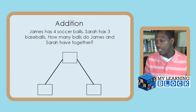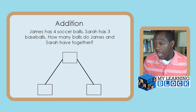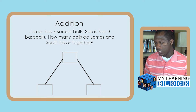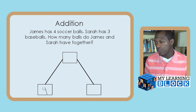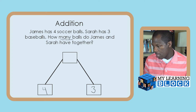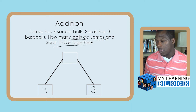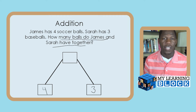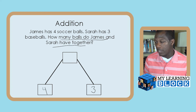So we have six here, three here — those are my two smaller numbers — and nine at the top. How does your child understand how to get there? How about an addition sentence! Here's a problem: James has four soccer balls, Sarah has three baseballs. How many balls do James and Sarah have together? We'll put James's number — four — on one side, and Sarah's number — three — on the other side.